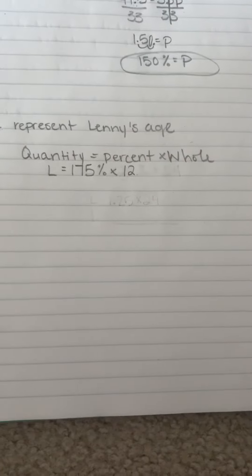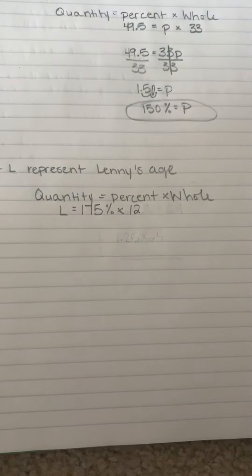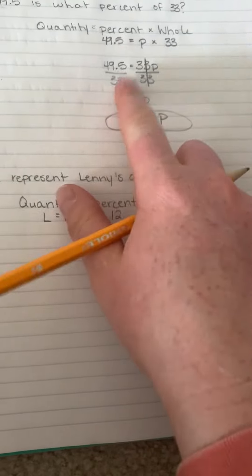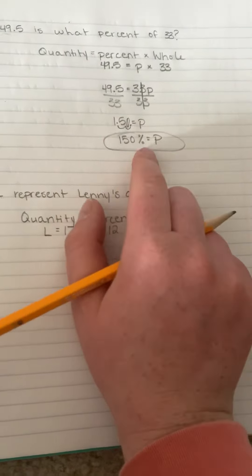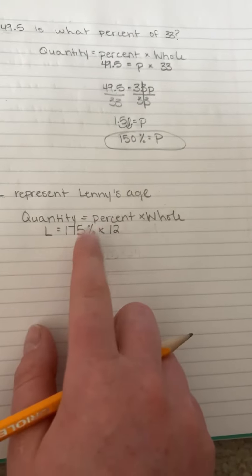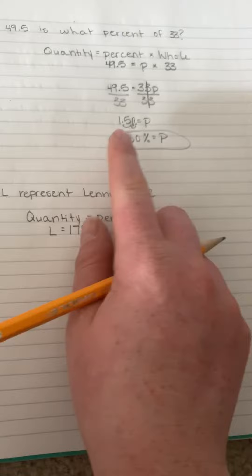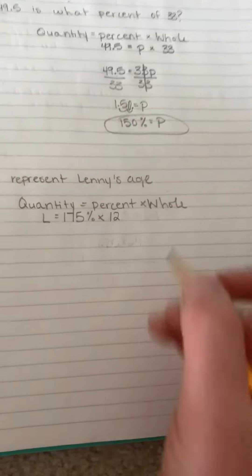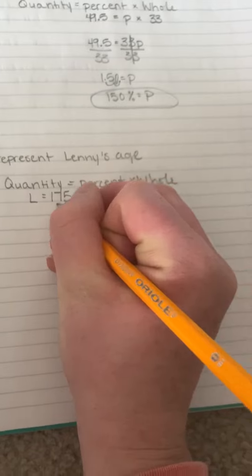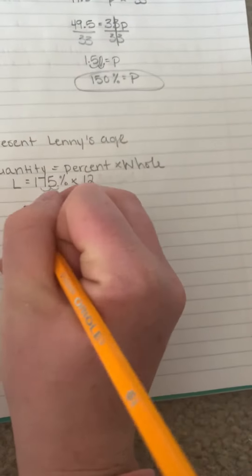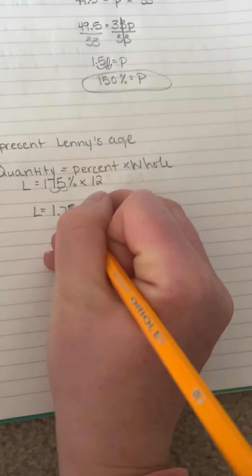So now I have this equation: L equals 175% times 12. Just like up here, I'm going to convert my percent. So now I want to convert this percent into a decimal. And here I move my decimal place two places to the right, but since it's already in percent form, I'm going to move it two places to the left because I want it to be a decimal. So I have L equals 1.75.